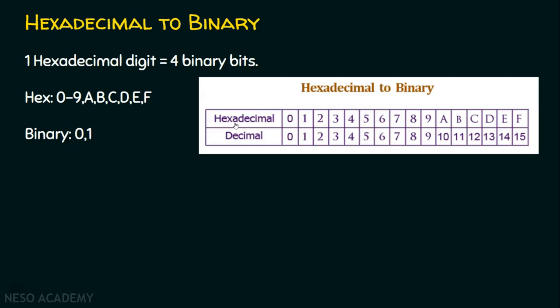The decimal equivalent is placed as a table. We have hexadecimal numbers and we have decimal numbers. In decimal, if it is 0, the hexadecimal equivalent is 0 only. So from 0 to 9, the decimal equivalent and hexadecimal equivalent are the same.